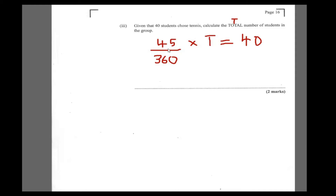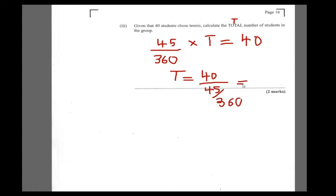All you have to do is make t the subject. Since we're multiplying by 45 over 360, we divide both sides. So the total amount of students is equal to 40 divided by 45 over 360, and that gives us 320. So there are 320 students in the group, and 40 of them crazily chose tennis.